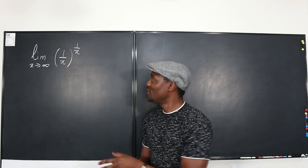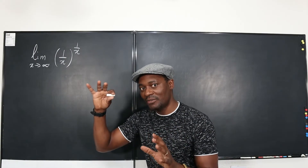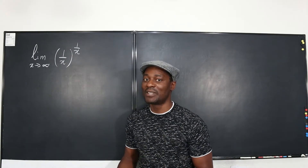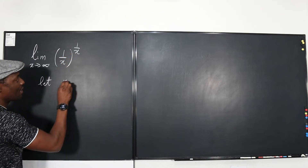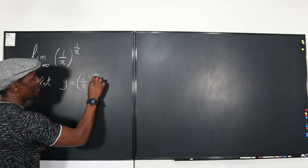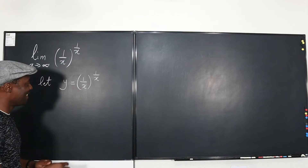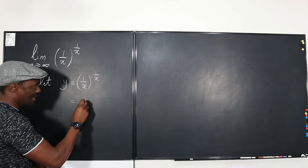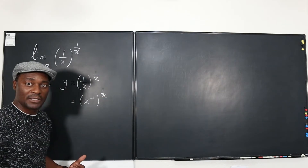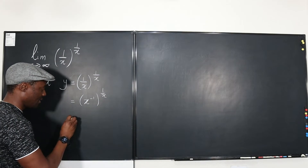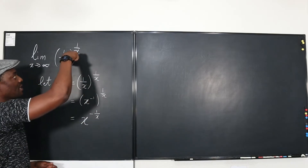The first thing I'm going to do is simplify this and make it something we can easily work with, instead of having two fractions interacting at an exponential level. Let y equal (1/x) raised to (1/x). I know I can write the inside as x to the negative 1, and by the law of exponents I can multiply the exponents. So this is the same thing as x to the negative 1 over x — another way of expressing this problem.